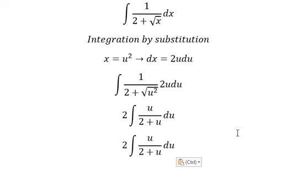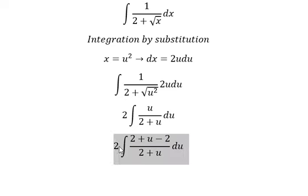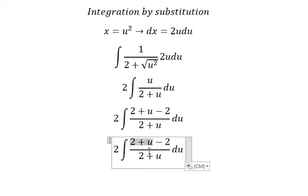Next we add and subtract 2 in the numerator. This gives us 2 times the integral of (2+u-2) over (2+u) du, which simplifies to 2 times the integral of (1 minus 2 over (u+2)) du.